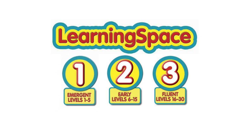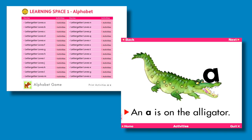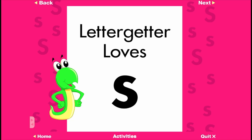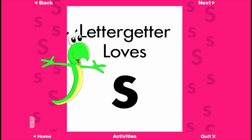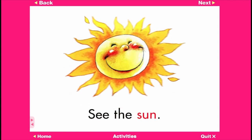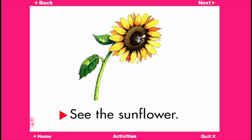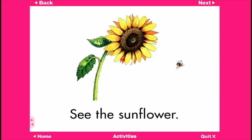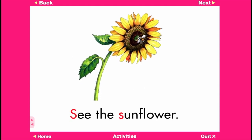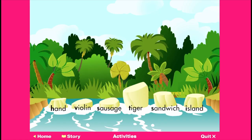Let's take a close look at Learning Space 1. The alphabet e-books feature 26 animated stories that focus on letter names and sounds. The title of this story is Lettergetter Loves S. Each story is followed by three interactive activities to further explore the letter and reinforce learning.